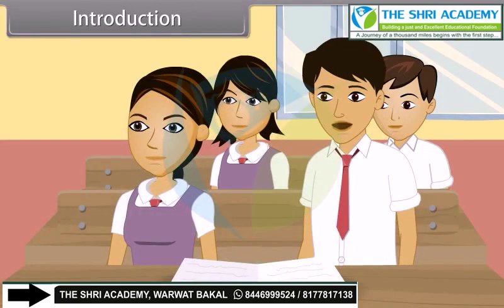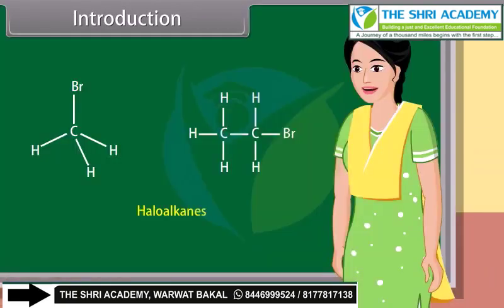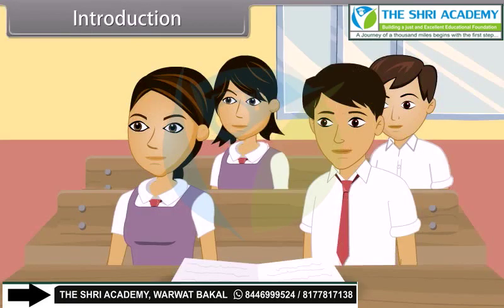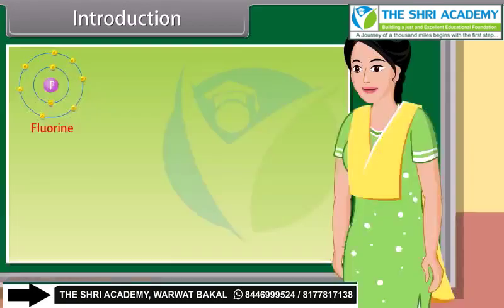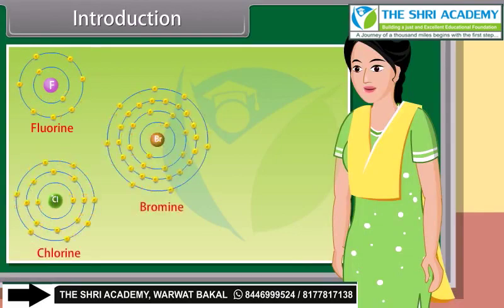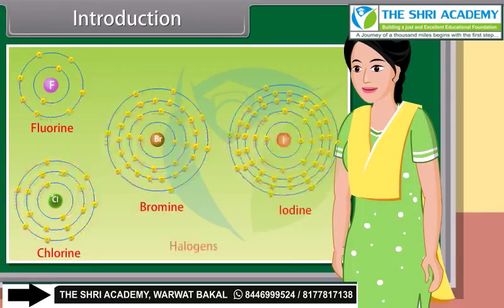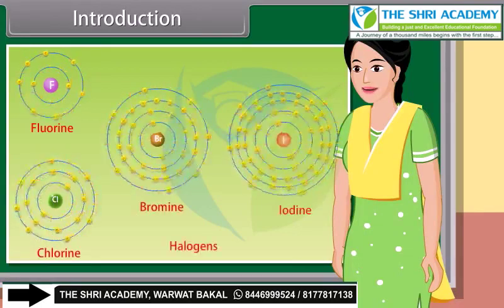Ma'am, what are haloalkanes? Haloalkanes are the chemical compounds in which one or more of the hydrogen atoms in an alkane have been replaced by a halogen atom. And what are halogens, ma'am? Halogens are the reactive non-metals having seven valence electrons.